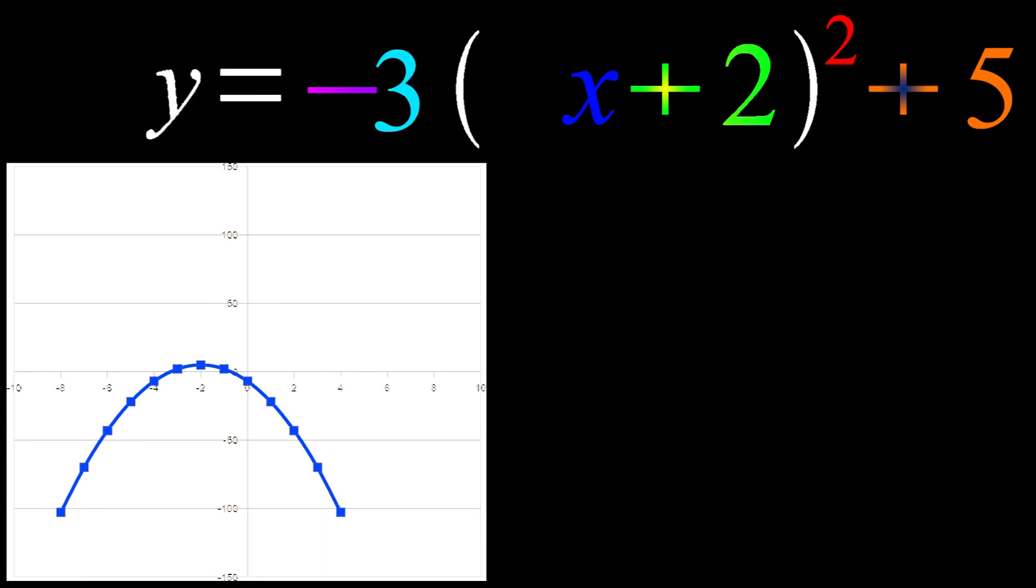Much like a negative outside the parentheses, a negative inside the parentheses is also going to be a reflection. But unlike a negative outside the parentheses, it's not going to be a reflection from a given point on the curve, but rather a reflection across the y-axis or about the y-axis. So it would be like holding a mirror at the y-axis and drawing each and every point from one side of the axis to the other side of the axis.